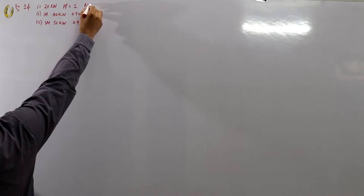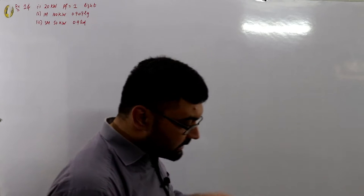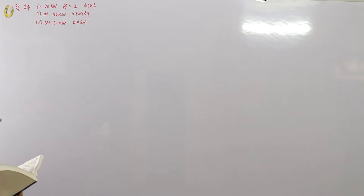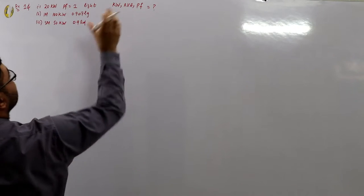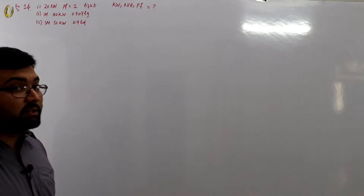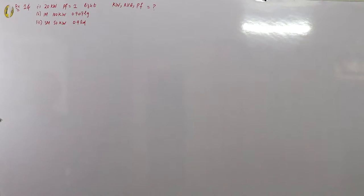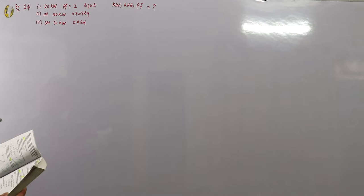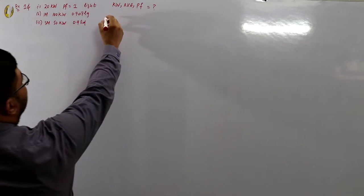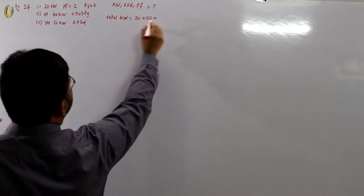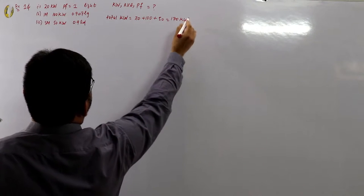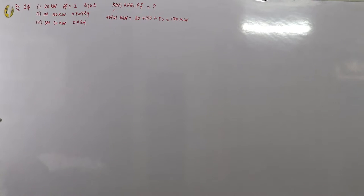Calculate the total KVA and kilowatts delivered by the generator and the power factor at which it works. The total kilowatts, total KVAs, and the power factor of the generator are all unknown. The total kilowatts can be found directly: 20 plus 100 plus 50 equals 170 kilowatts delivered by the generator.